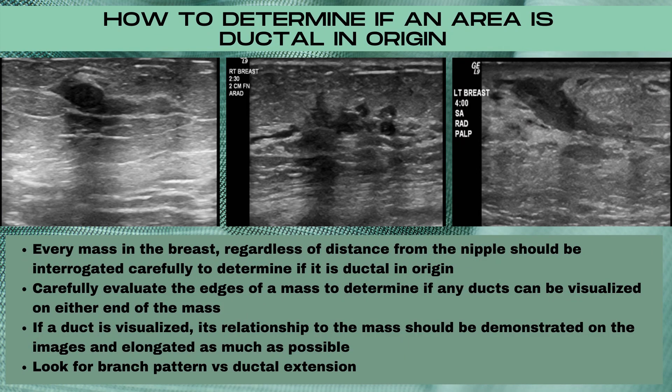It's important when you find a mass in the breast to determine if it has any relationship to the ducts. Carefully scrutinize each edge of the mass to determine if you can visualize a milk duct. If you see a milk duct, its relationship to the mass should be demonstrated on the ultrasound images — try to elongate the duct as much as possible with the mass inside to show the relationship. Look for branch pattern and ductal extension, and every mass in the breast, regardless of distance from the nipple, should be interrogated carefully to determine if it's ductal in origin.